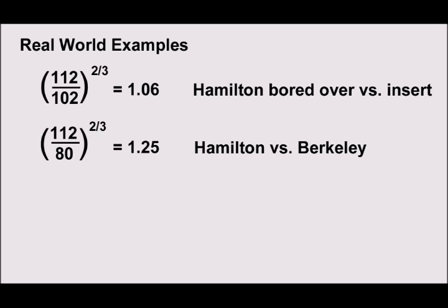And the second example compares my Hamilton bored slightly over with a Berkeley. And so, the Hamilton diameter is about 112 millimeters, and the Berkeley is around 80. I didn't get that exact, but it's pretty close to that. So, you take that ratio to the two-thirds power, and you end up with 1.25. So, that means for a particular power, the Hamilton will have 25% more thrust than the Berkeley.